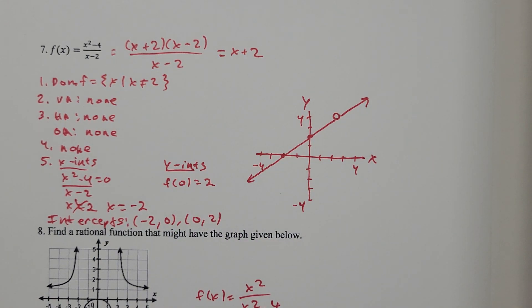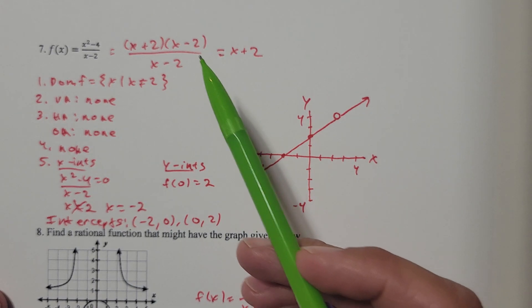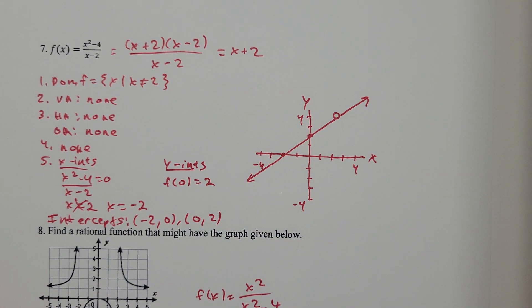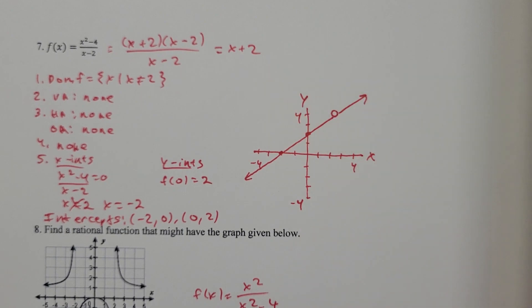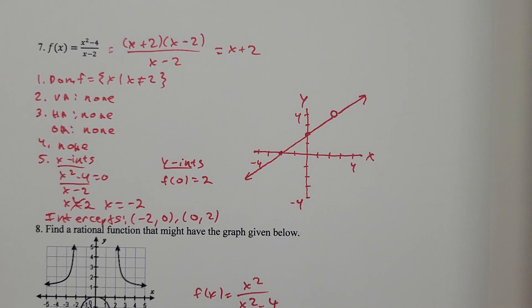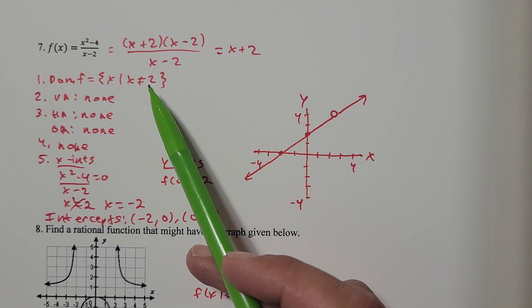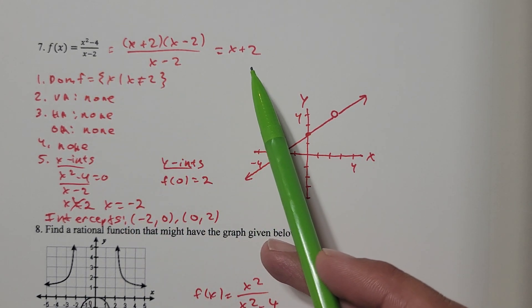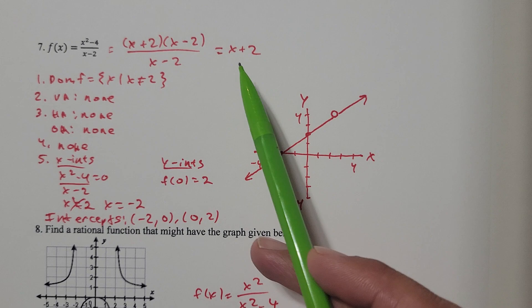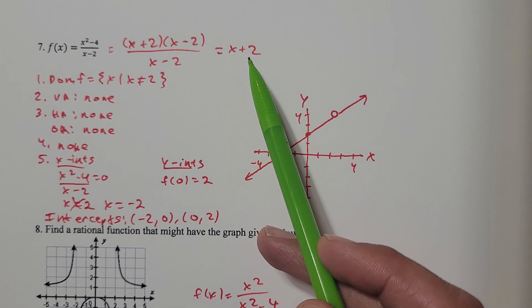x squared minus 4 factors as x plus 2 times x minus 2, and the x minus 2's will cancel, so I get x plus 2. Now, is f of x equals x squared minus 4 over x minus 2 the same thing as y equals x plus 2? The answer is no — they're not the same thing, because 2 is the one number that makes these different from each other. The domain of y equals x plus 2 is all real numbers, but we're graphing f of x, so I can't use 2.